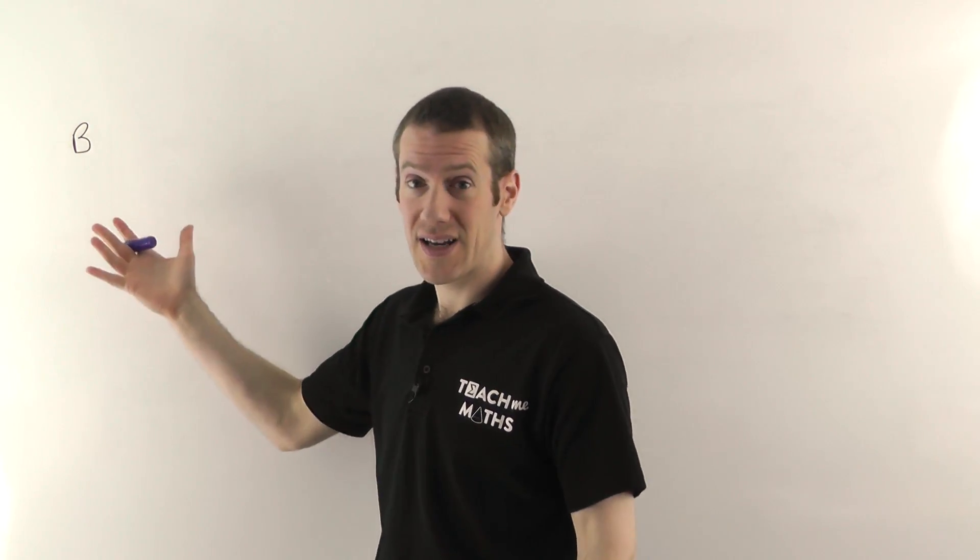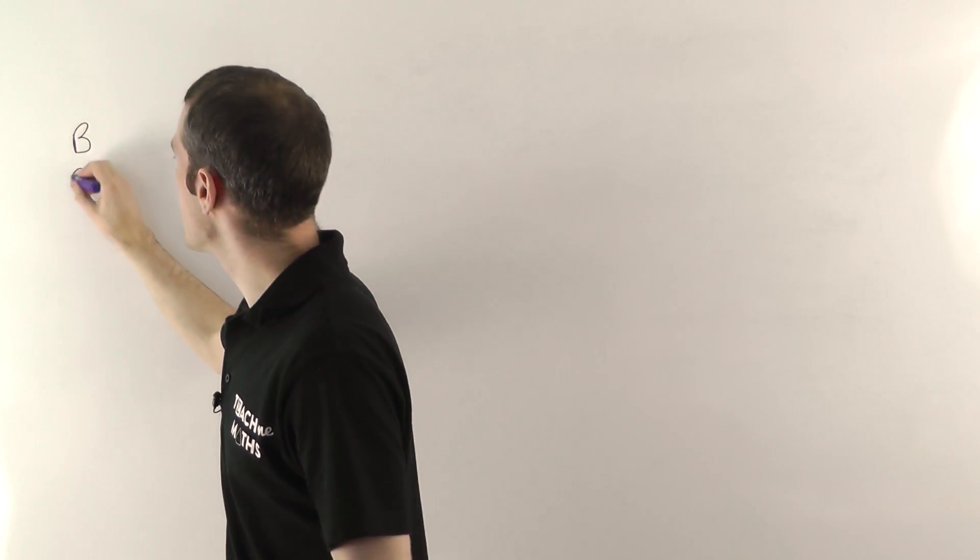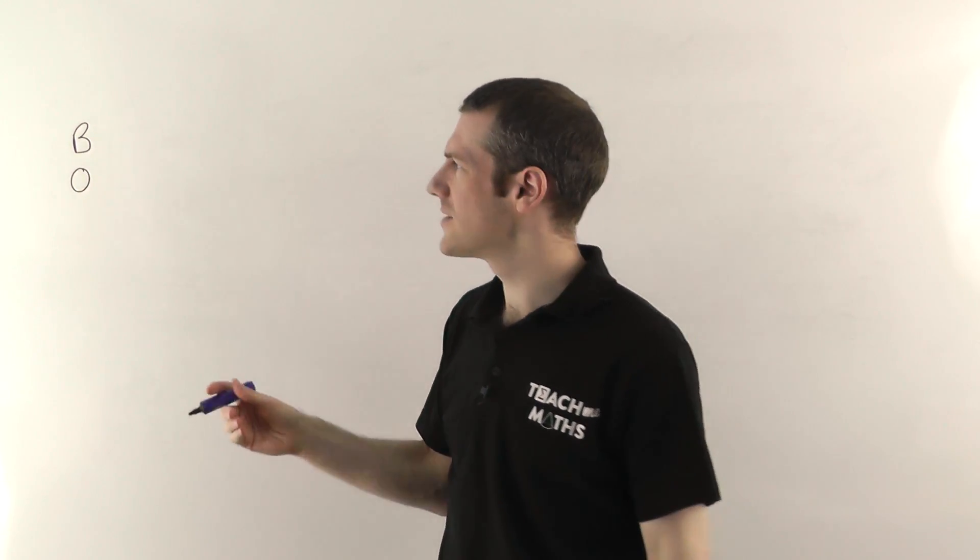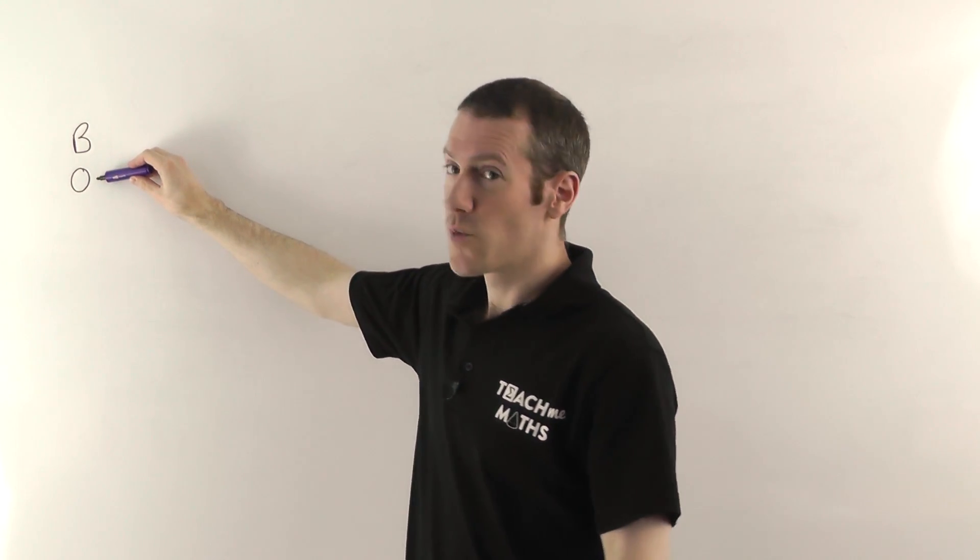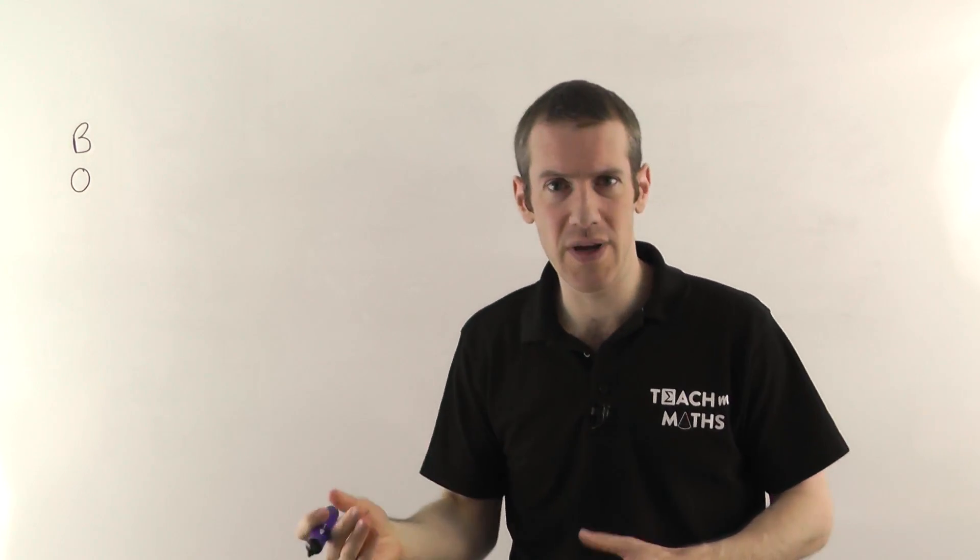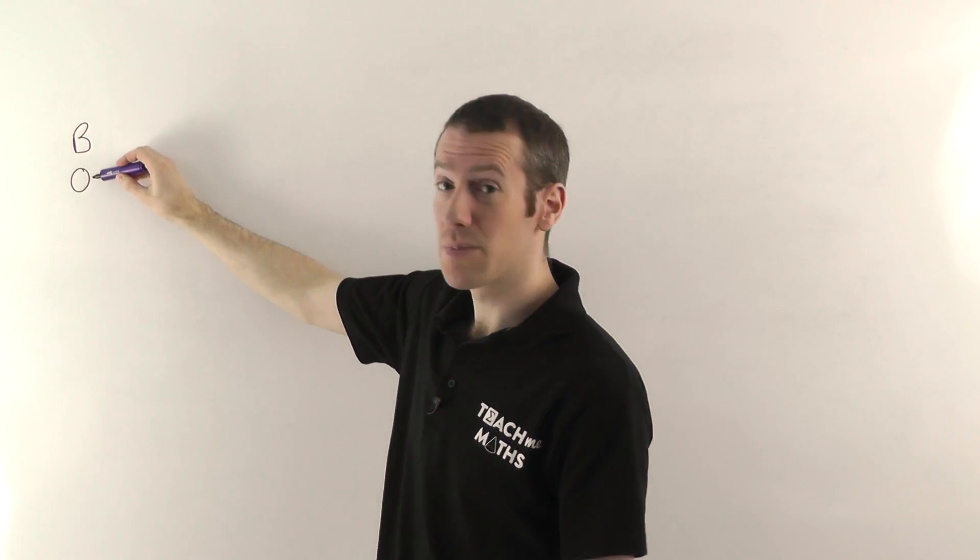So the B is brackets, if you've got any brackets you work those out first. The O stands for other, now this includes a whole variety of things, most of the time though the thing you need to worry about is powers. So squaring, cubing, square rooting, that would all take place here.